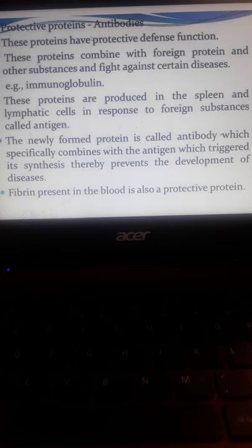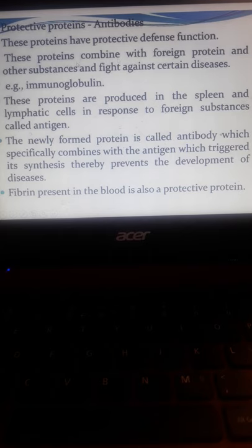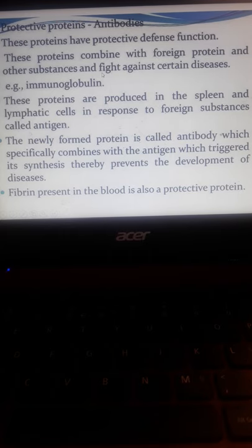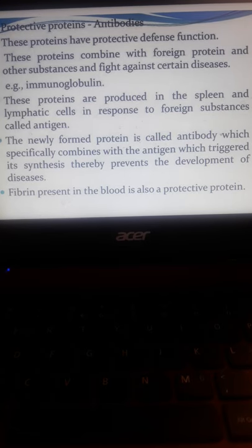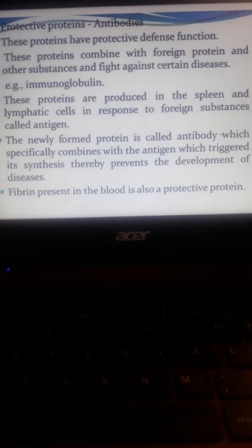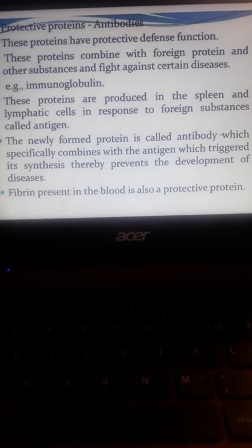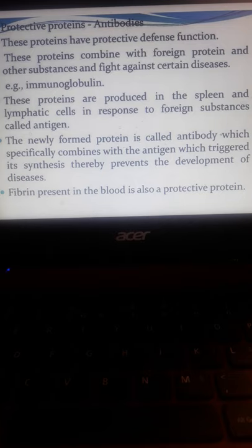Protective proteins, we have antibodies. These are responsible for defense mechanism. The proteins combine with foreign proteins and other substances to fight against certain diseases. The immunoglobulins are protective proteins. These proteins are produced in spleen lymphatic systems and respond to foreign substances like antigens or other microorganisms, bacteria, viruses. The newly formed protein is called antibody which specifically combines with the antigen which triggered its synthesis, therefore prevents the development of disease. The antibody is the soldier of the body, so it is involved in the defense for infections and diseases.